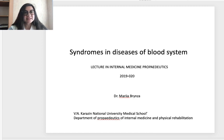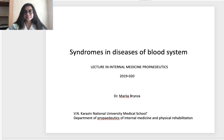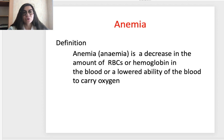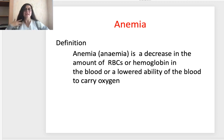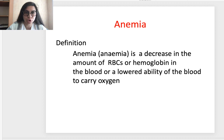Now let's start our lecture about syndromes and diseases of the blood system. I have prepared for you the main diseases and main syndromes in hematology to briefly explain the main symptoms. Let's start with the most common hematological disorder: anemia.